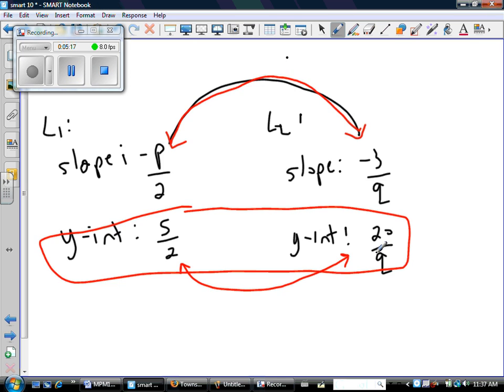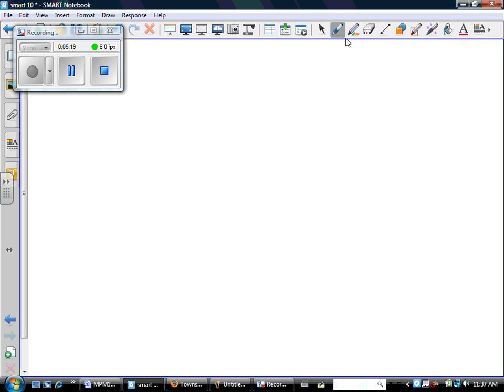So if the y-intercepts have to be the same, then that means that the y-intercept of the first line must equal the y-intercept of the second line. Right? So here's the y-intercept and here's the y-intercept. And if it's the same line, then they must be the same value. So I'm going to try to solve for q.